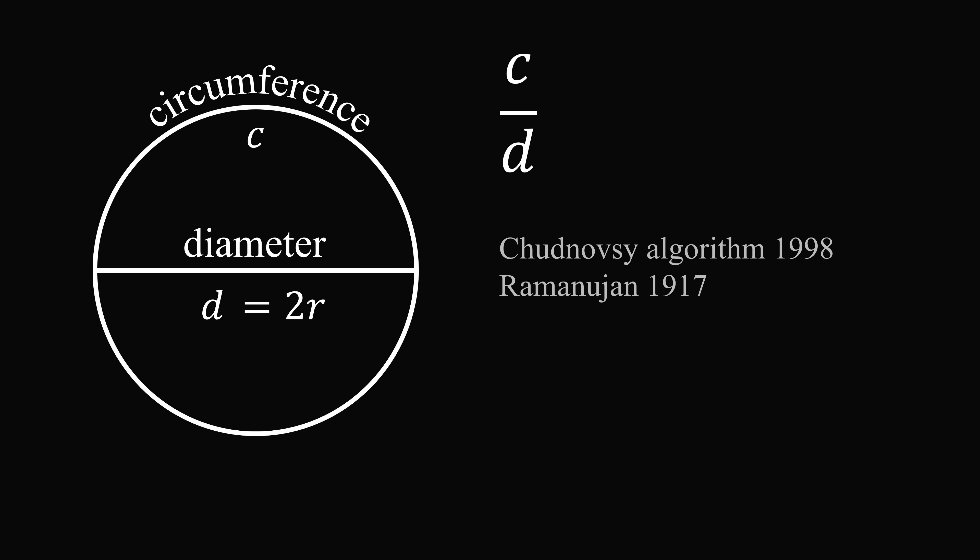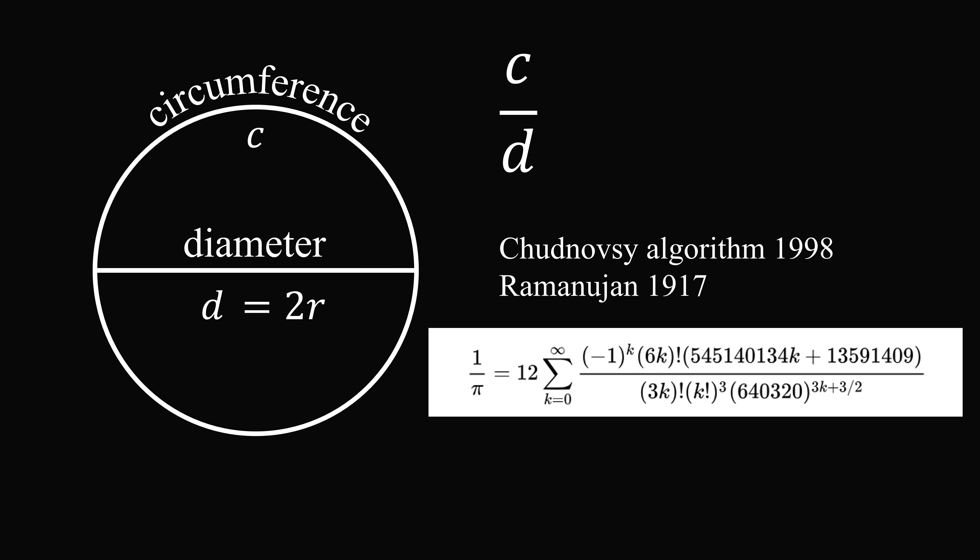Now the current record for pi is based off the Chudnovsky algorithm, which is based off of Ramanujan's pi formulas. And this is a kind of formula that looks something like this.